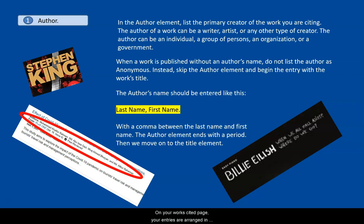On your Works Cited page, your entries are arranged in alphabetical order by the author's last name or the first full word of the entry, which could be the first word of the organizational author's name, or the first full word of the title if there is no author listed.